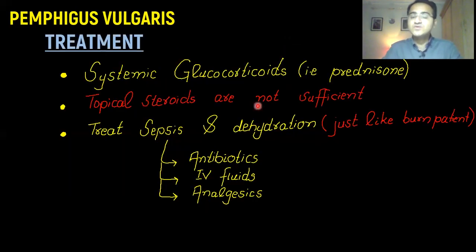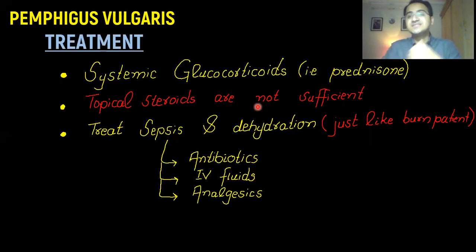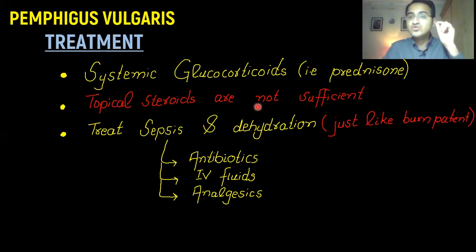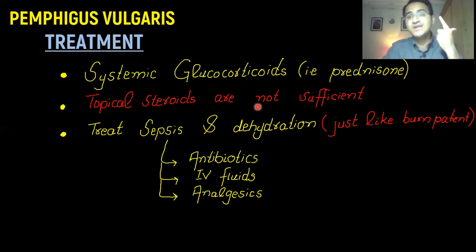Treatment of Pemphigus vulgaris includes systemic steroids, for example prednisone. Topical steroids are not enough. Pemphigus vulgaris is a very severe disease in which the skin barrier is damaged, resulting in loss of water, dehydration, and bacterial invasion leading to sepsis. You must treat a patient of Pemphigus vulgaris just as if the patient has burns — give antibiotics to protect from infection, IV fluids to combat fluid loss, and analgesics since it is a very painful condition.